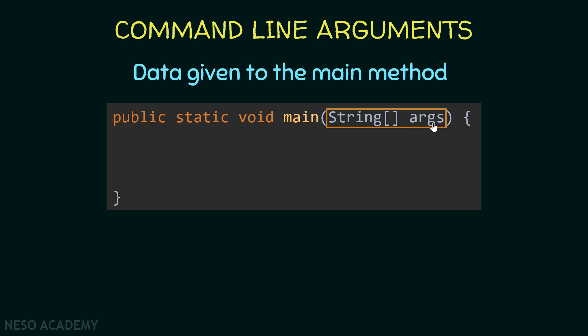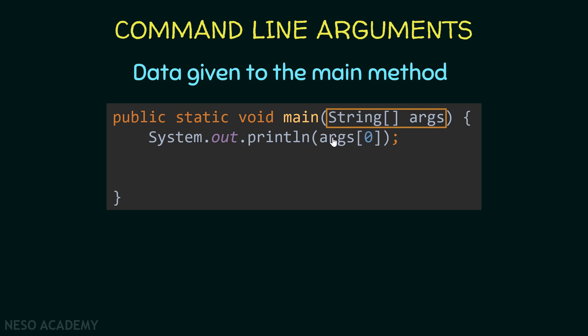Suppose we give the main method some arguments. We use the name of the group in order to access the arguments, and each argument will be a string. I'm going to use the println function to print the first string. To do that I use the name of the group and between brackets I put the number zero. This tells Java to get the group of arguments and give me the first argument.